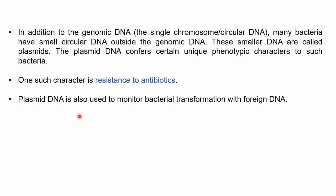Plasmid DNA is also used to monitor bacterial transformation. Transformation is when we want a particular gene to be expressed in bacteria — we insert foreign DNA into the bacteria using a plasmid as a vehicle. This is a technique used in laboratory experiments. So plasmid DNA is used to monitor the bacterial transformation with foreign DNA.